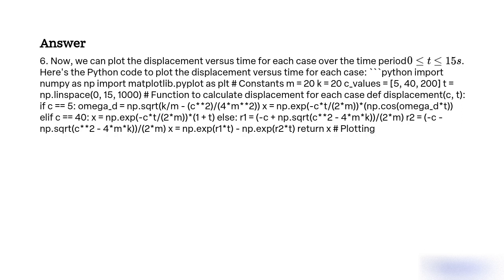If c == 40 (critically damped): x = np.exp(−c*t/(2*m)) * (1 + t). Otherwise (over-damped): r1 = (−c + np.sqrt(c**2 − 4*m*k)) / (2*m), r2 = (−c − np.sqrt(c**2 − 4*m*k)) / (2*m), x = np.exp(r1*t) − np.exp(r2*t). Return x, then plot.